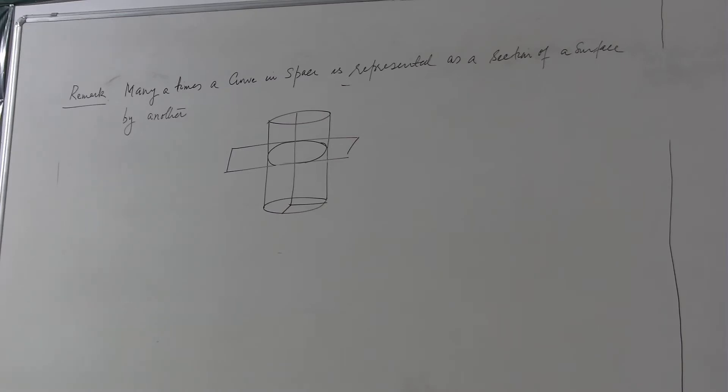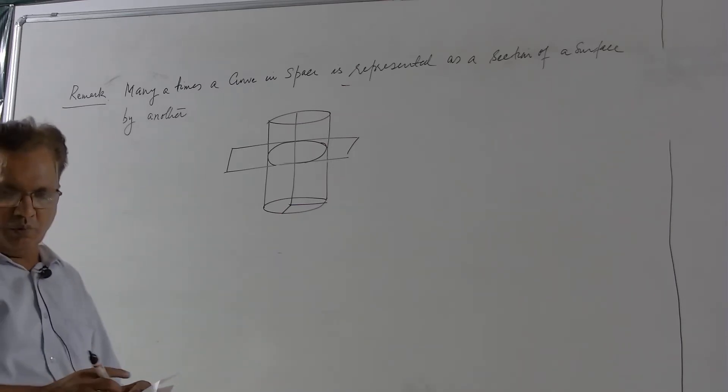So this circle would lie in space and it is obtained as a section of a cylinder through a plane. Similarly, if you cut a sphere through a plane once again you will be getting a circle.